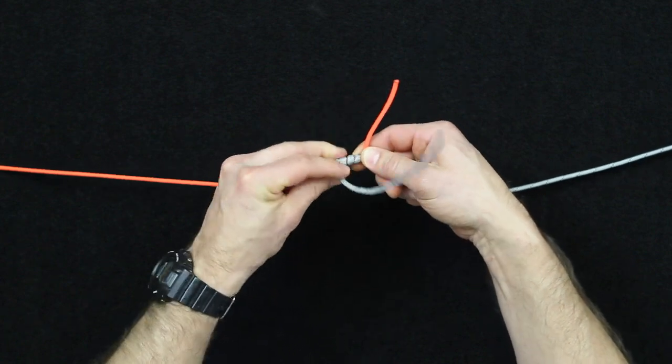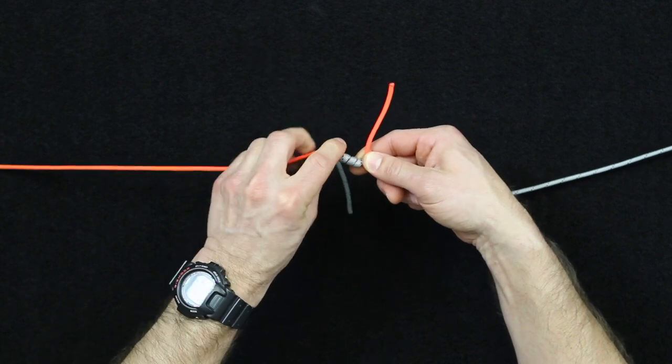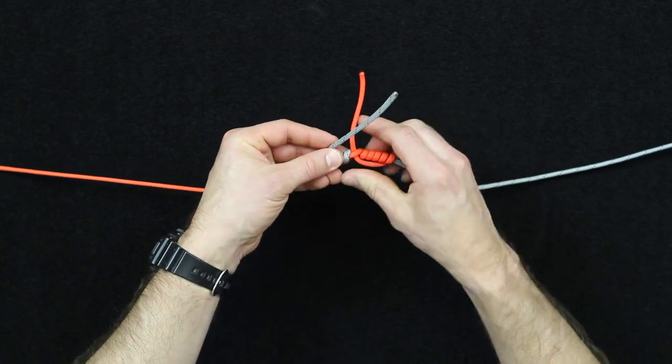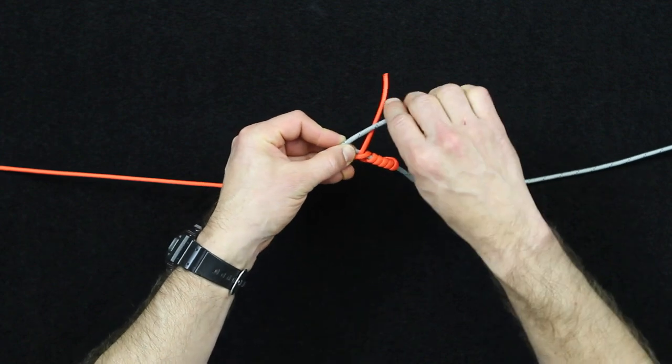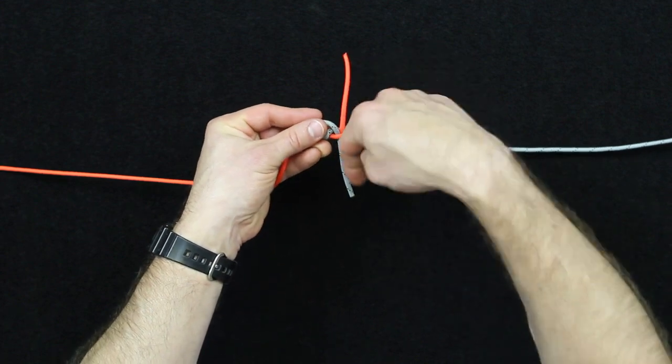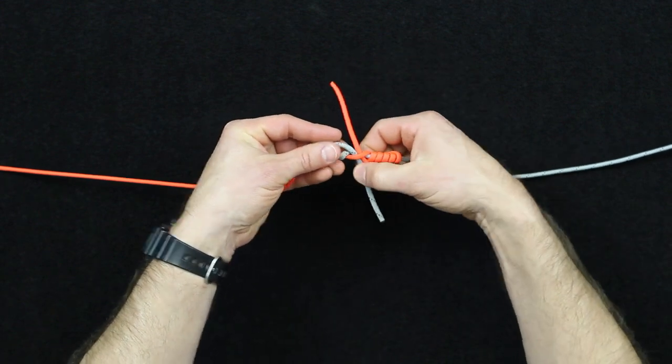and now what you'll do is you'll take this working end and you're going to pass it through that center channel that's created. Just like this coming from the opposite direction. So this one will be coming down, whereas this was coming up.